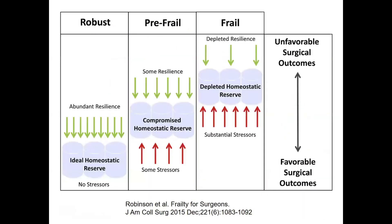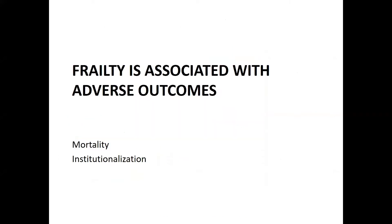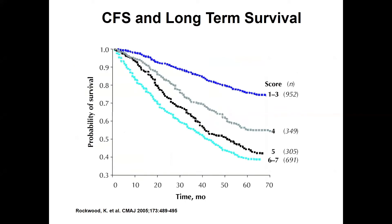They require more care. In the robust state there is an abundance of resilience, whereas as you move toward the more frail state there are substantial stressors and depleted resilience. The problem for surgeons — and internists — trying to make decisions about applying certain therapies or procedures is that you may not be able to tell who is robust and who is frail on the surface. You need a way to detect frailty before exposing them to that stressor.